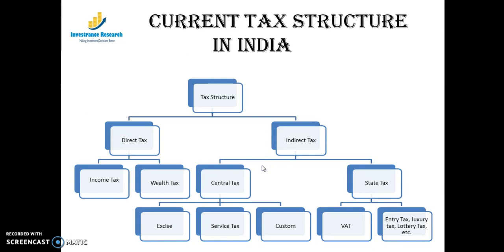The current tax structure in India — before July 1st — consists of direct taxes and indirect taxes. Direct taxes are what individuals pay, like income tax and wealth tax. Indirect taxes apply to manufacturers and goods and services we use — going to a restaurant, watching movies, buying cars, or taking services. All of these are categorized as indirect taxes.